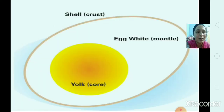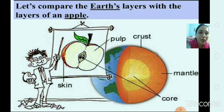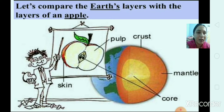You can see the outer layer of the earth is called the crust, the middle layer is called the mantle, and the third layer is the core. Let's compare the earth's layers with the layers of an apple: the outer layer is the crust, the middle layer is the mantle, and the inner layer is the core — just like the apple has outer layer skin, middle layer pulp, and inner layer core.